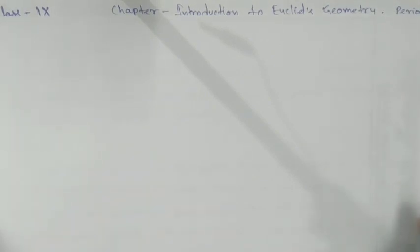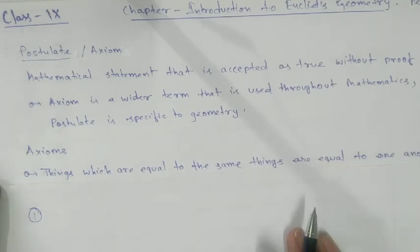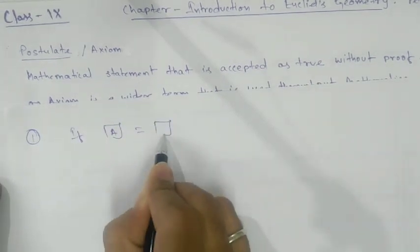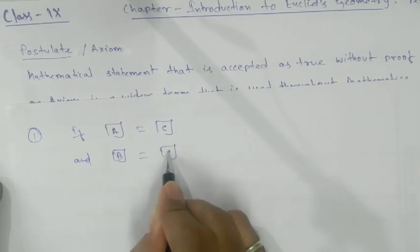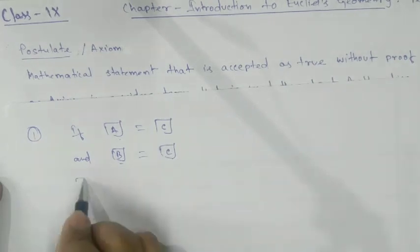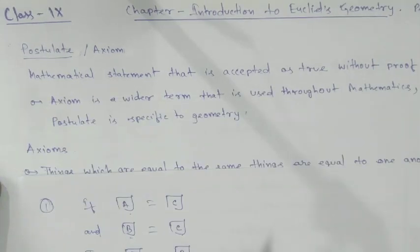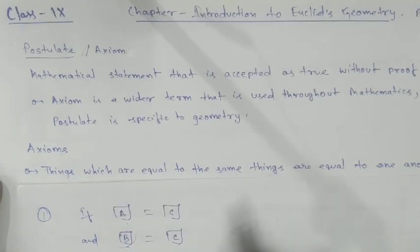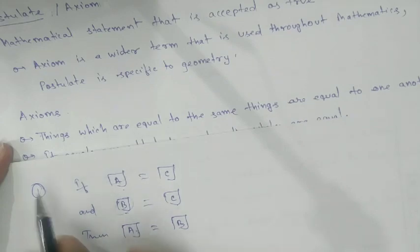Axiom 1: Things which are equal to the same thing are equal to one another. If A is equal to C and B is also equal to C, then A must be equal to B. This is your first axiom — things which are equal to the same thing are equal to one another.